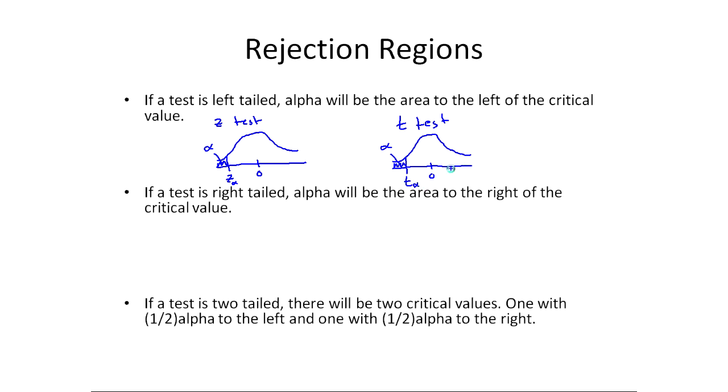Now this t alpha comes from a different table, which I'll show you, and degrees of freedom is n minus 1, and that helps us determine what t alpha is. But once again, the shaded region is the rejection region. Since they're so similar for the next couple, I won't draw both. I'll just say it'll be t or z alpha.